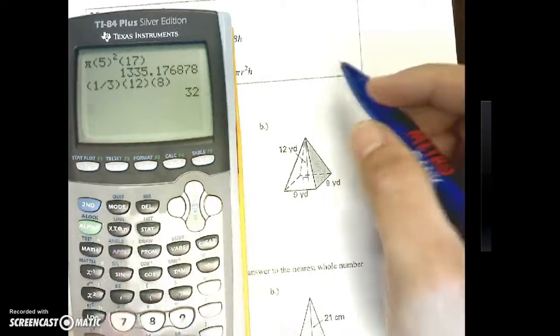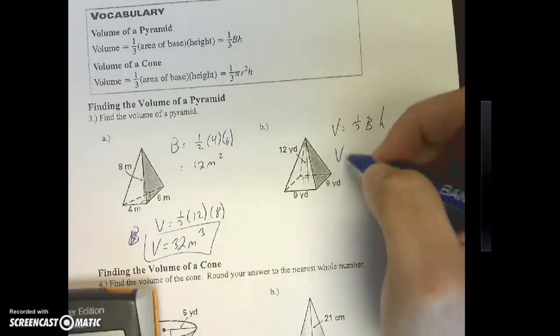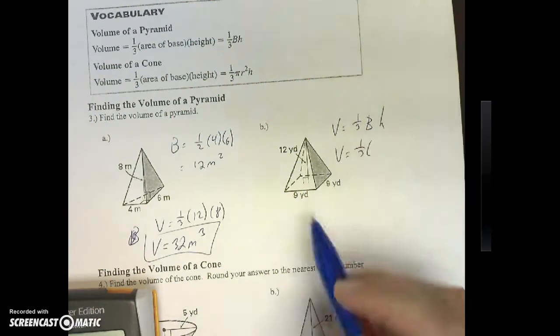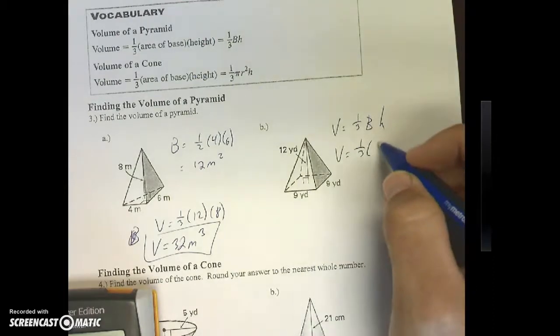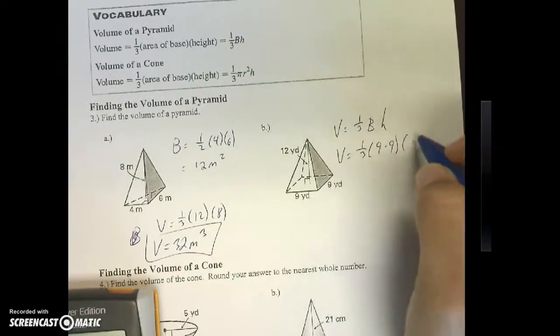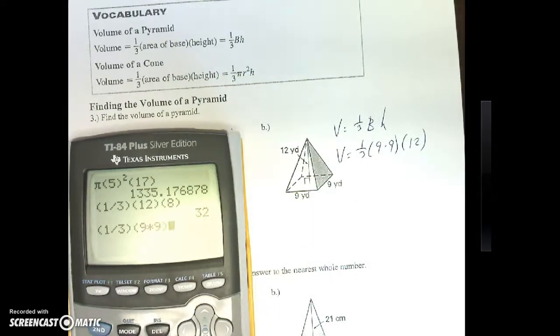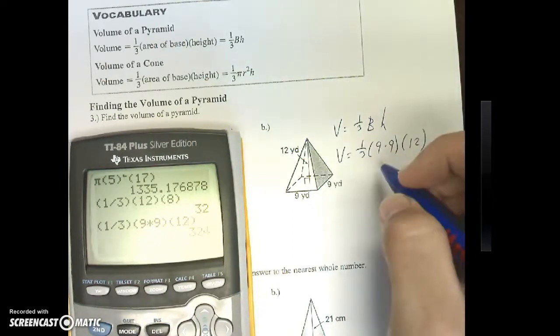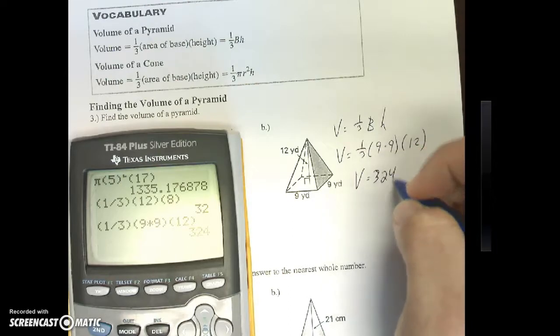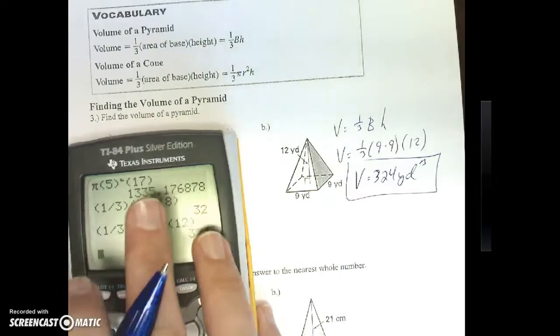Here, our volume, again, is going to be one-third area of base times height. One-third. This one's a little bit easier. Our base is a square. So nine times nine, or nine squared, times my height, which straight up is 12. So again, parentheses, one divided by three. Nine times nine, times 12. 324 yards cubed.